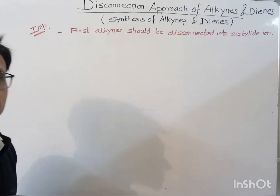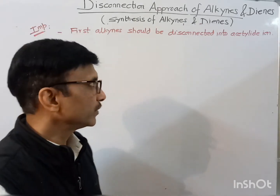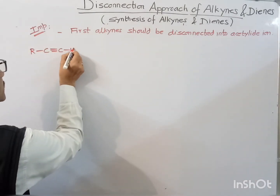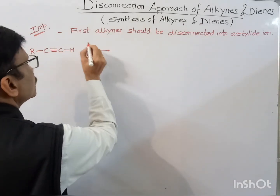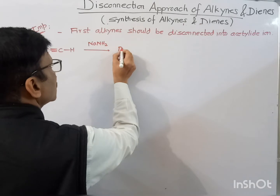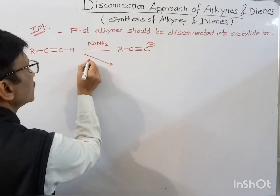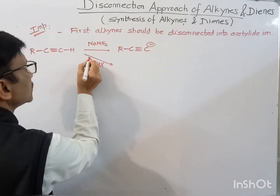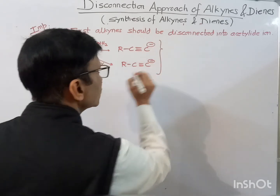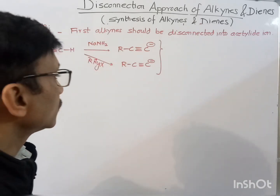This acetylide ion may act as a nucleophile and it may give the nucleophilic substitution reaction or nucleophilic addition reaction. So suppose if we have a terminal alkyne, this can be converted into the acetylide ion in the presence of a base. In presence of a reagent, it can also extract this acidic hydrogen and give you the acetylide ion. This acetylide ion may then act as a nucleophile and attack a carbonyl compound, alkyl halide, or some other compound.